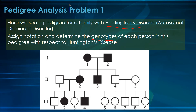Just a couple notes here: this is generation one, this is two, this is three. So this individual right here is individual 1-1, this individual is individual 1-2. How about this one down here? That one's individual 2-5. Let's begin by looking at this problem.